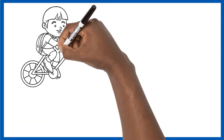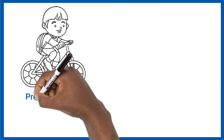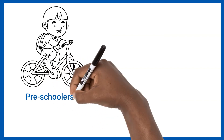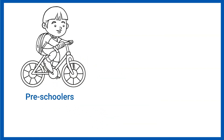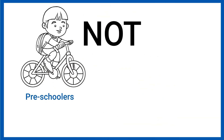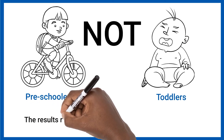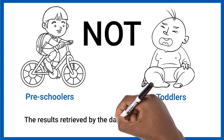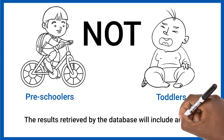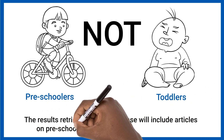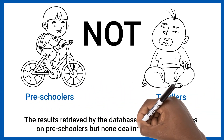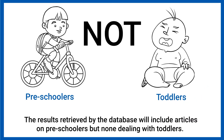For example, if a user was wanting to search for articles related to preschoolers and NOT toddlers, the results retrieved by the database will include articles on preschoolers but none dealing with toddlers. The database will exclude search terms that are placed after the NOT.